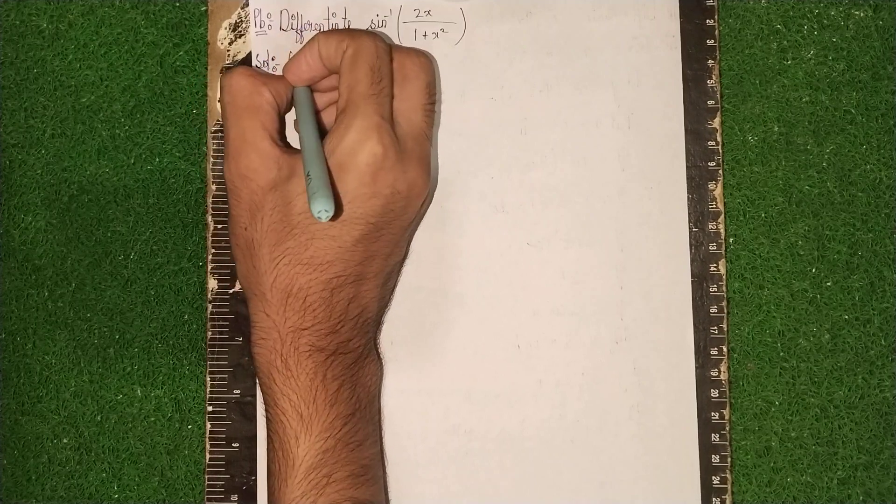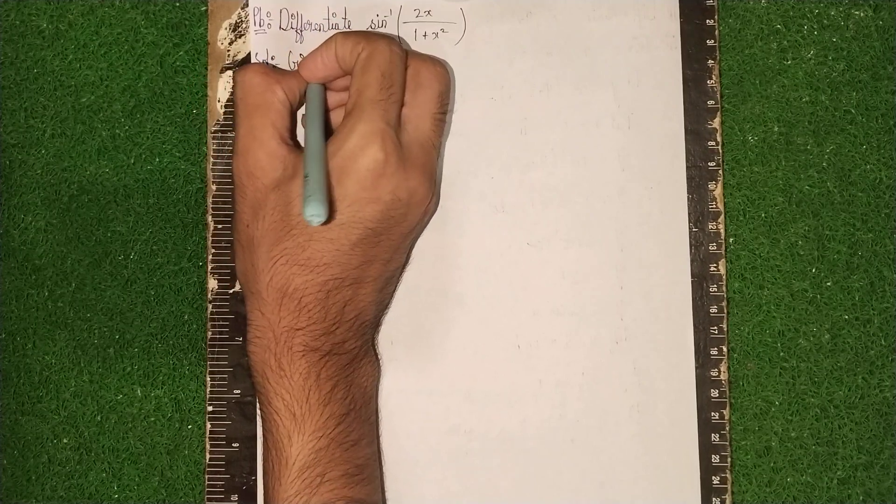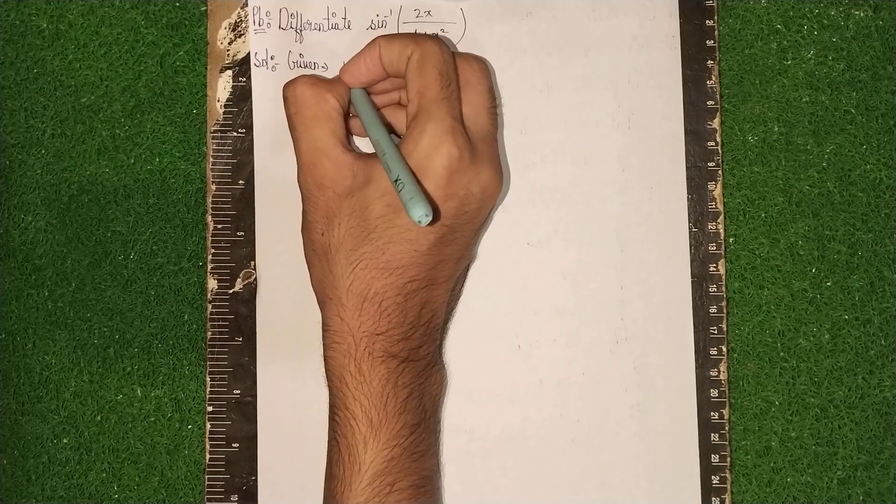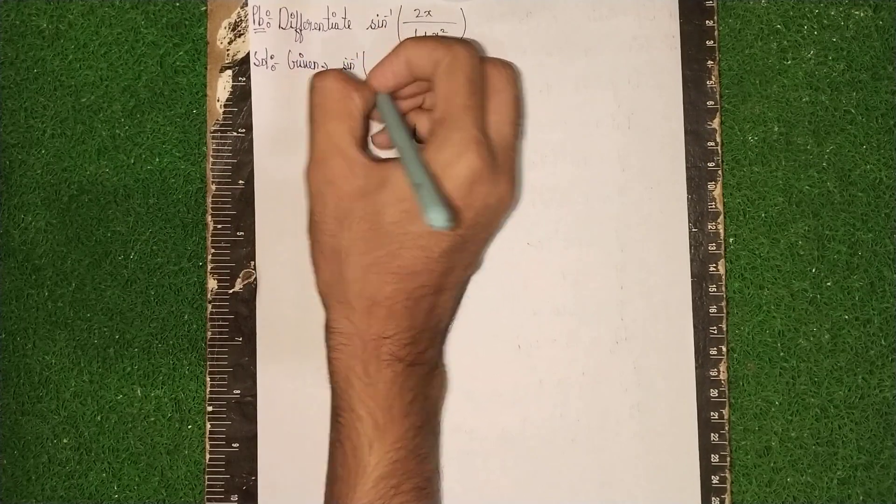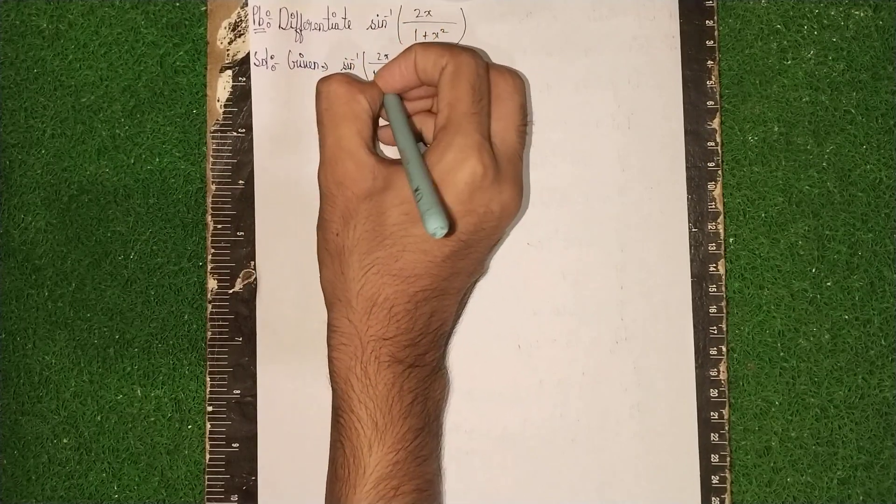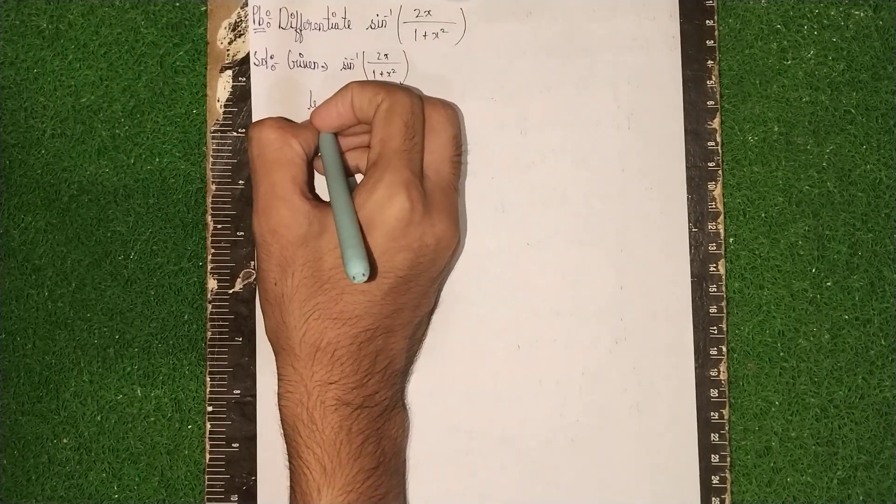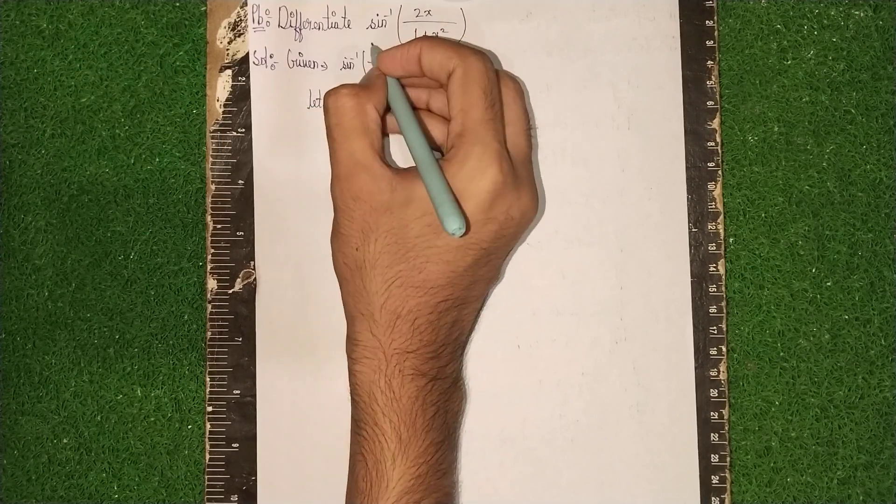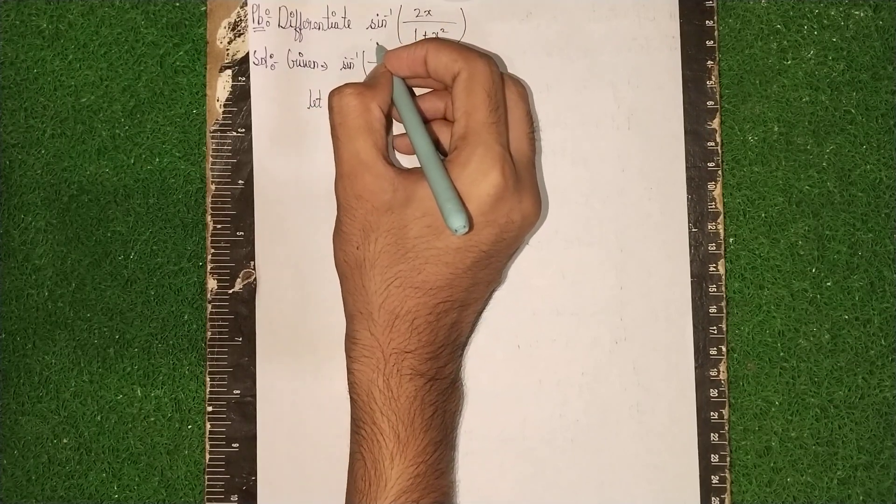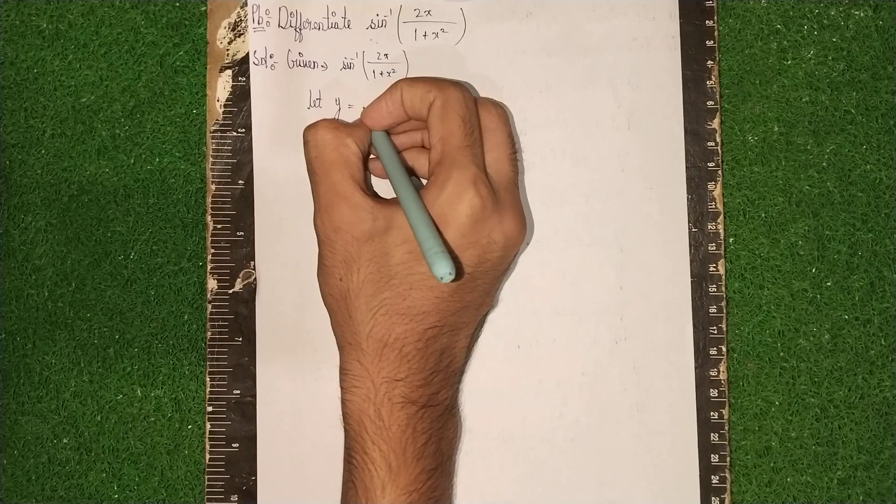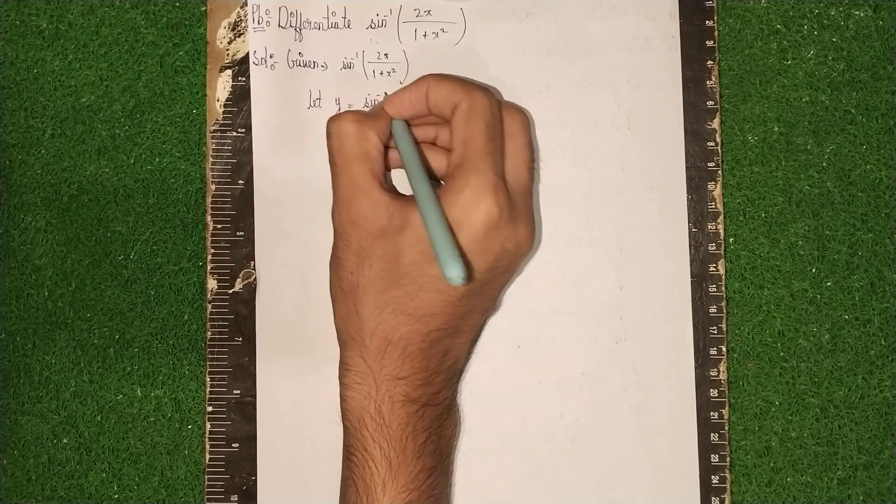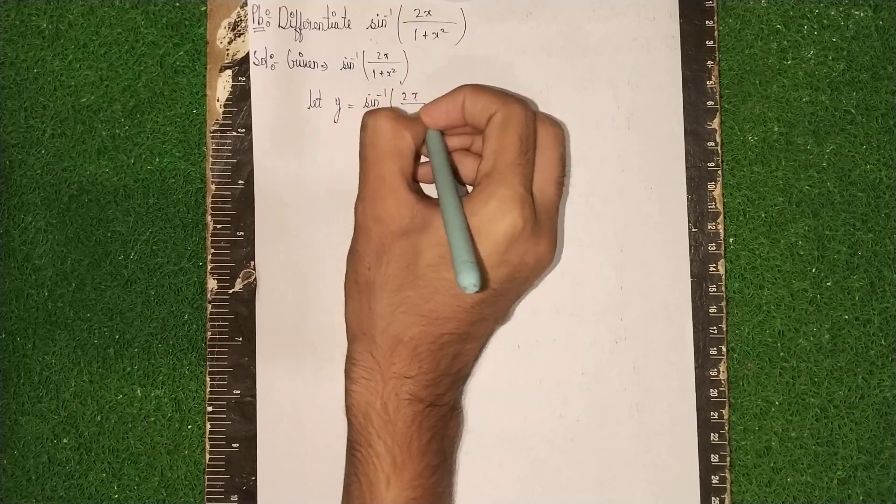Given is sine inverse of 2x/(1+x²). Now, let y equal to this whole question. So, let y = sin⁻¹(2x/(1+x²)).